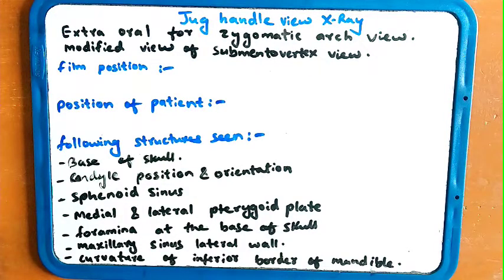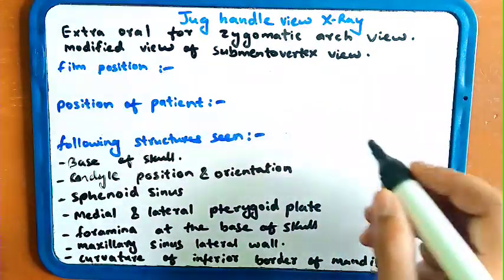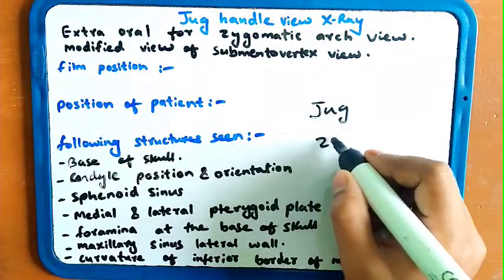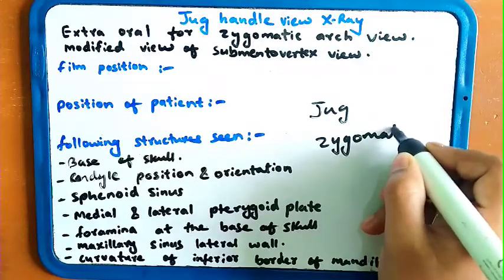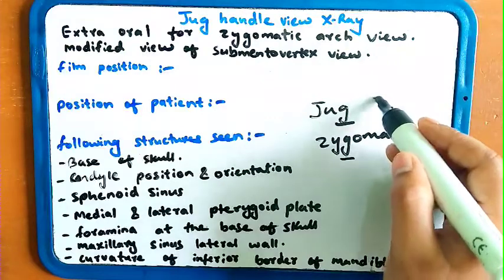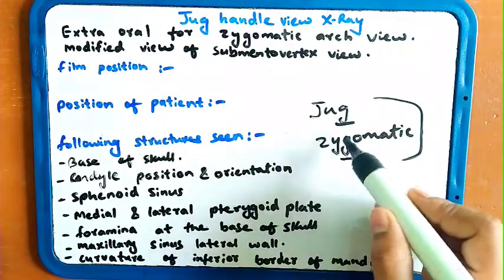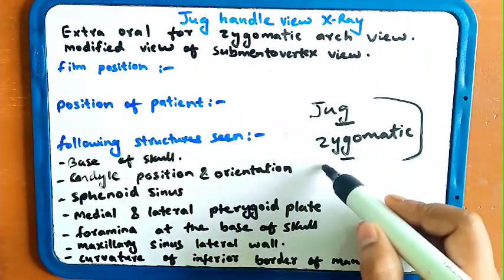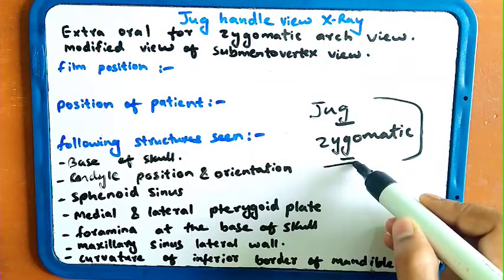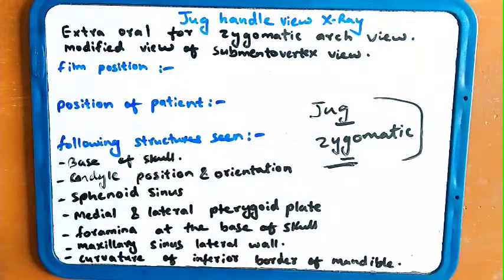The trick to remember the jug handle view X-ray: jug is similar to zygomatic — the letter 'g' is present in both words — jug and zyg. So, remember jug handle view is for the zygomatic arch. This is the trick for remembering the jug handle X-ray view.